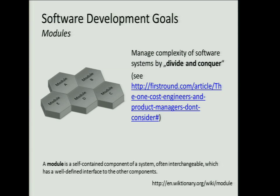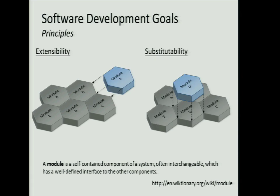The goals are: you want an extensible and extensible server, and you want to be able to substitute modules. This means you have an existing server and you simply want to add another module — interfaces should be clearly defined. Alternatively, you want to replace an existing module with another one. These are the two goals.